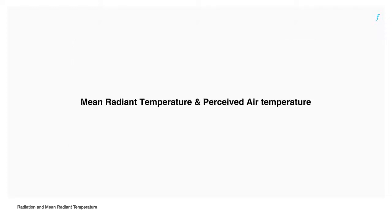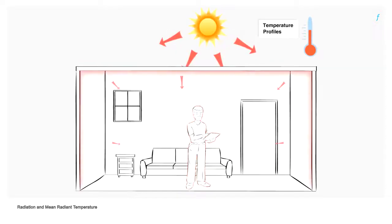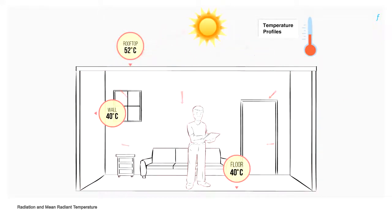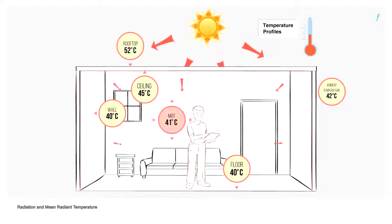Mean radiant temperature and perceived air temperature. One of the fundamental properties of heat transfer is that heat flows from a hotter body to a cooler body. In any room, there is constant heat exchange between the walls, roof, floor, people and other objects. The weighted average of the temperatures at which the surfaces of all such objects in a room radiate heat is the mean radiant temperature.